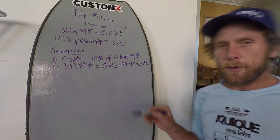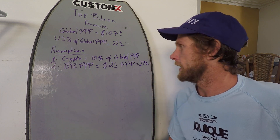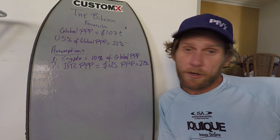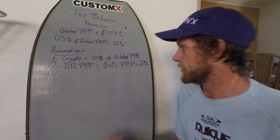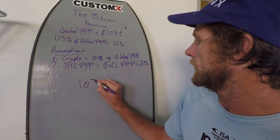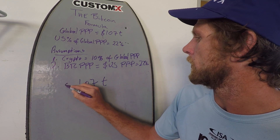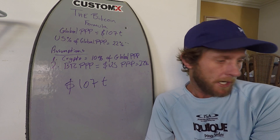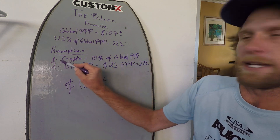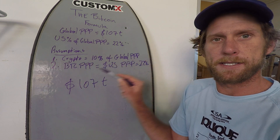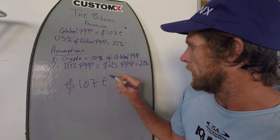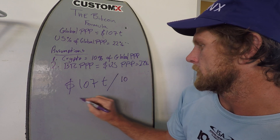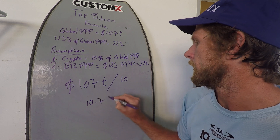So we've got everything we need to build our formula. Now all we've got to do is substitute in the actual figures and we'll see what result we get at the end. We start off with the world economic PPP of 107 trillion. We're going to use 10% of that because we're making the assumption that crypto will make up 10% of this one day. So we divide that by 10, and that brings us to 10.7 trillion.